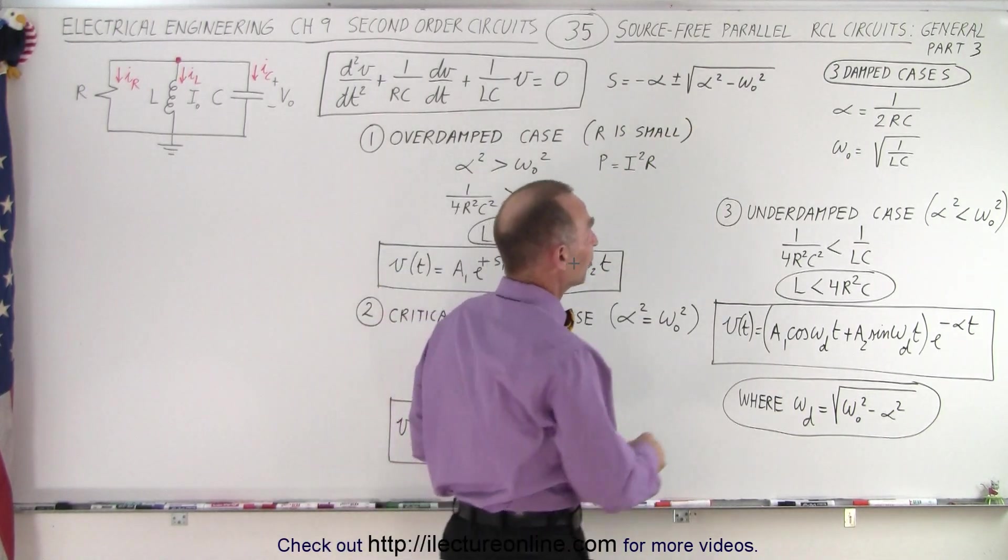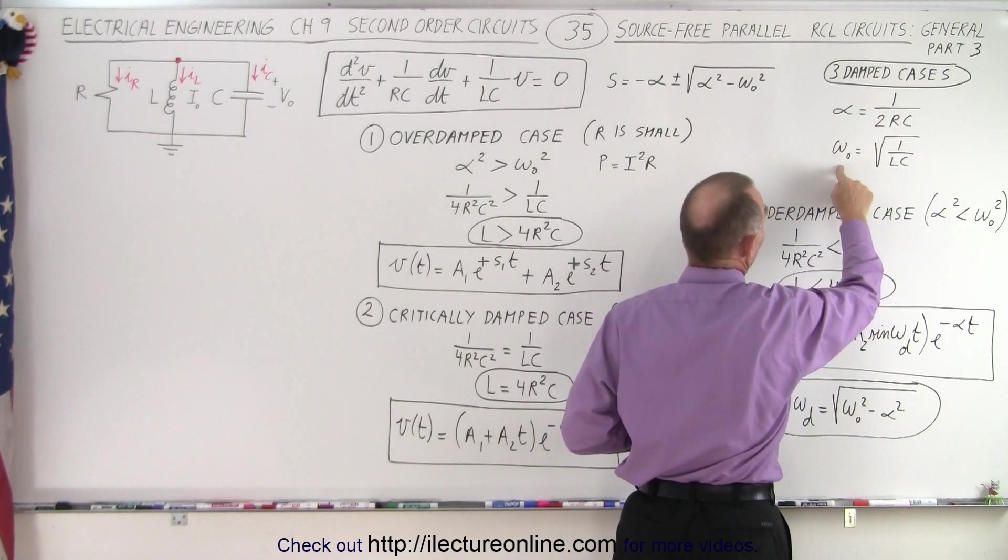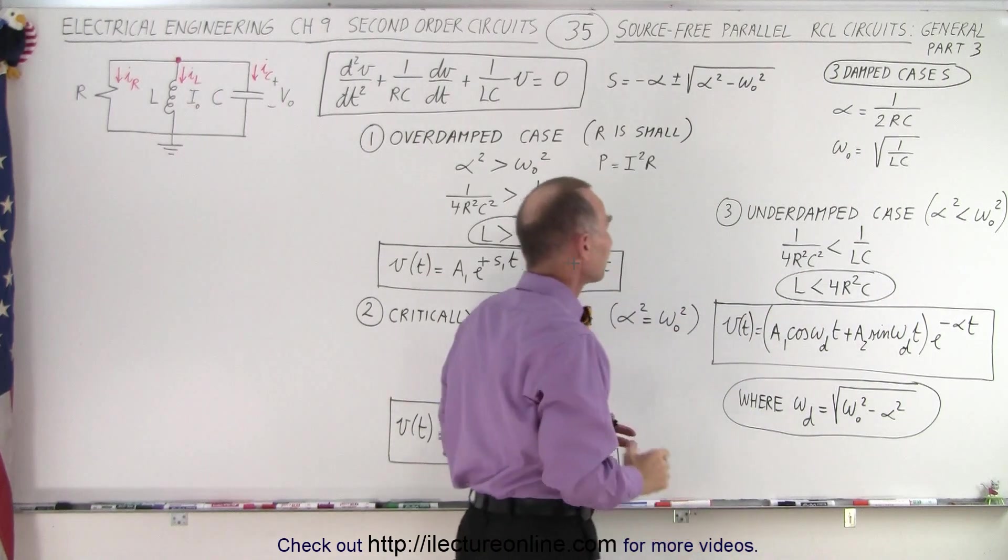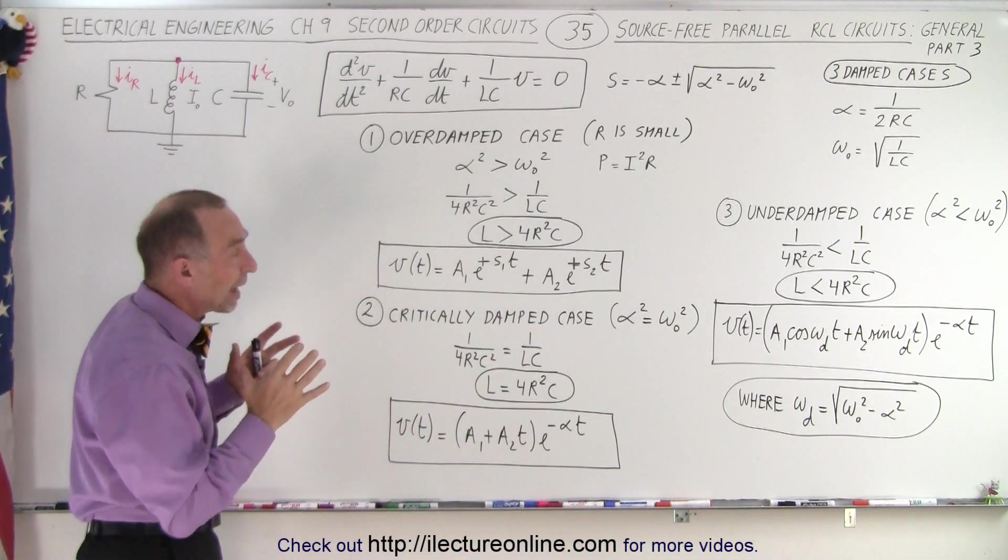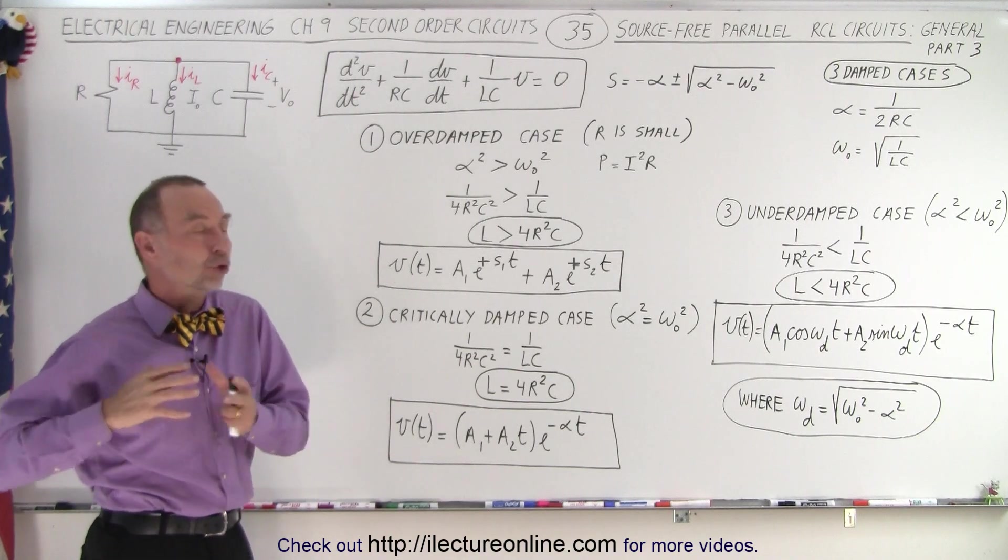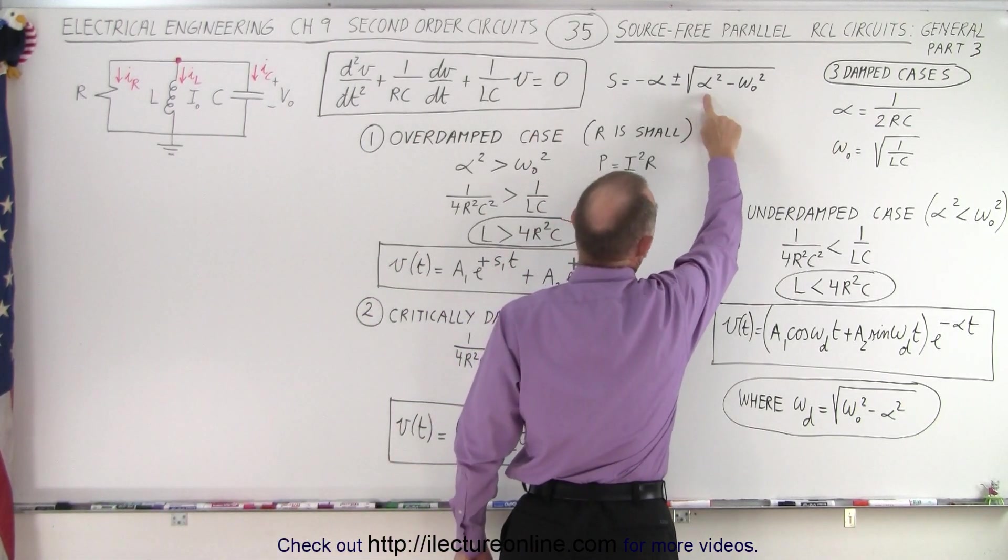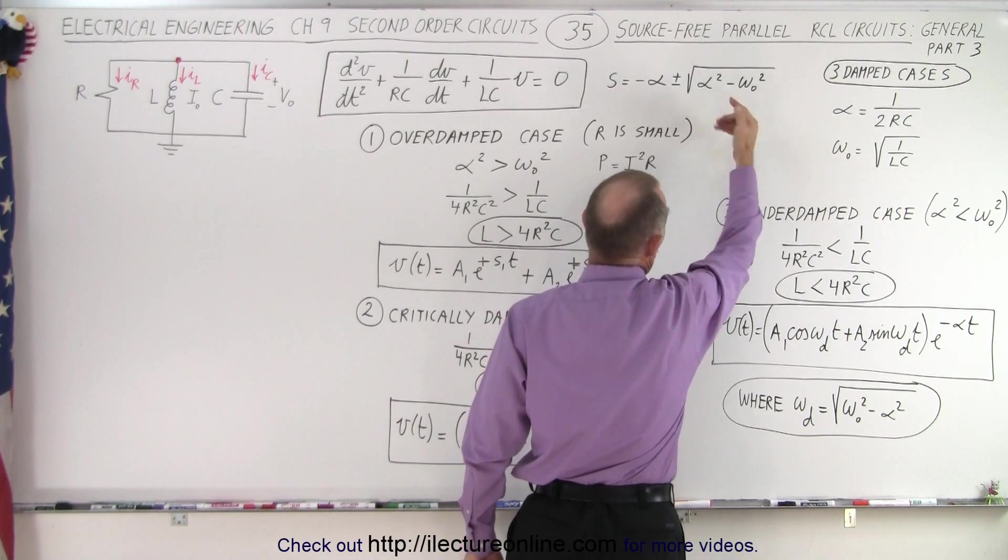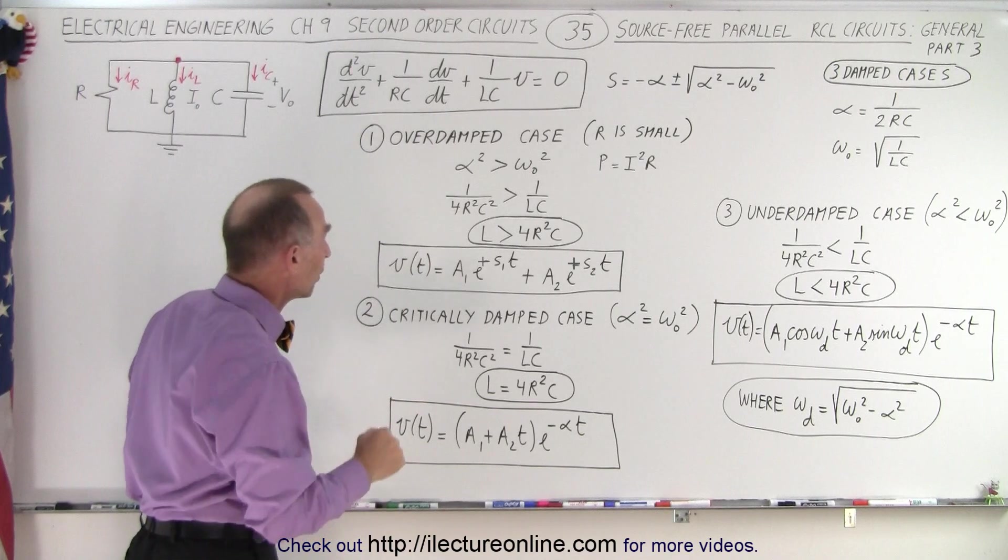We define alpha and omega sub-naught right here, where alpha is 1 over 2RC, and omega sub-naught is equal to the square root of 1 over LC. So what we realize then, is this equation now has three possible solutions, because this can be larger than zero, this can be equal to zero, or this can be less than zero. This gives us three different types of solutions to that differential equation.